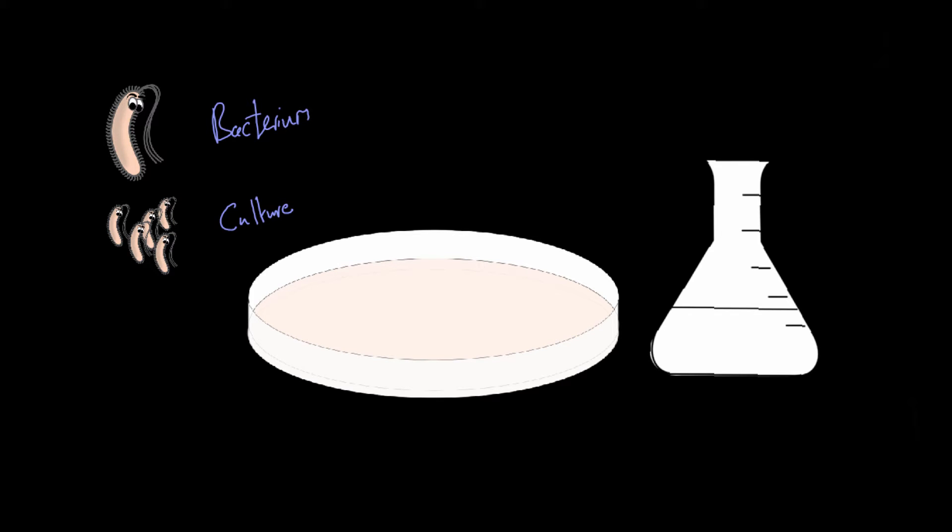Now in the lab, the thing that we actually grow them in is known as a petri dish. These are normally made of plastic, sometimes glass. But what's very important is that they are sterile. We can sterilize them using different machinery. For plastics, we can use things like gamma rays or UV. This is important because we don't want contamination.